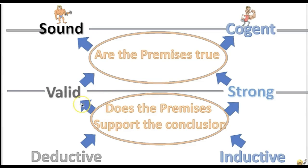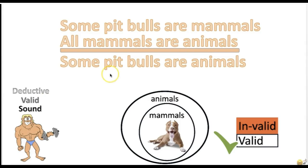So you know how to get to a valid argument. Let's go to the next question: are the premises true? If you get to a valid argument — that is, if the premises support the conclusion — and you also get true premises, the argument is said to be sound. For example, this argument is sound. It's valid, and the premises are true. If the two premises support the conclusion and both are true, then it's a sound argument. Is it true that some pit bulls are mammals? Yes. And all mammals are animals? Yes. Therefore, it's a sound argument — the strongest argument you can get.